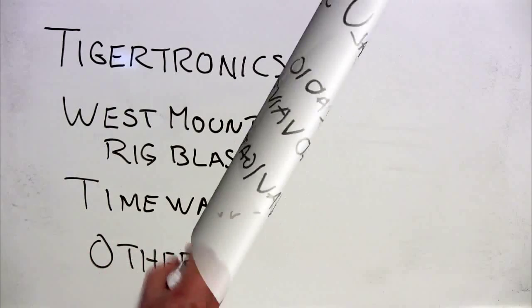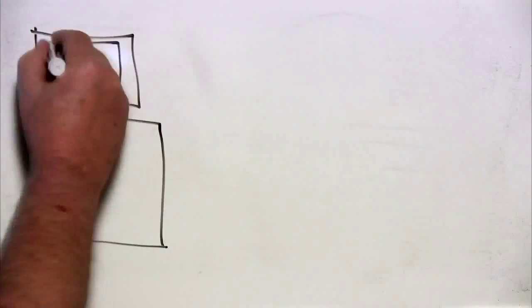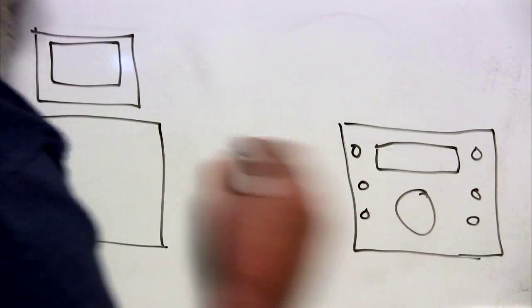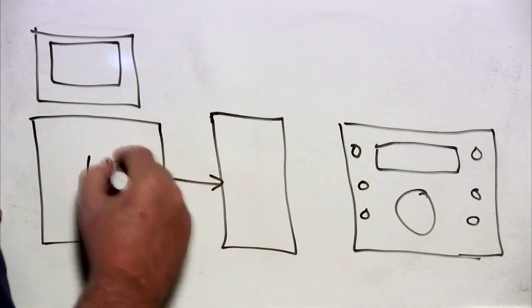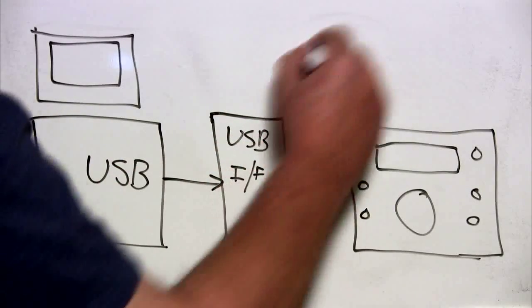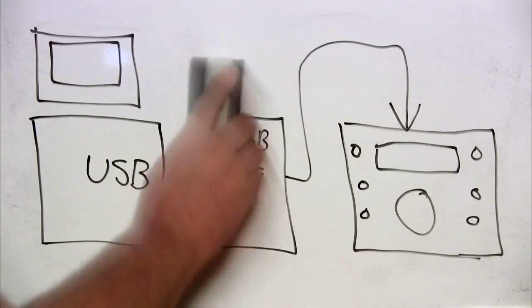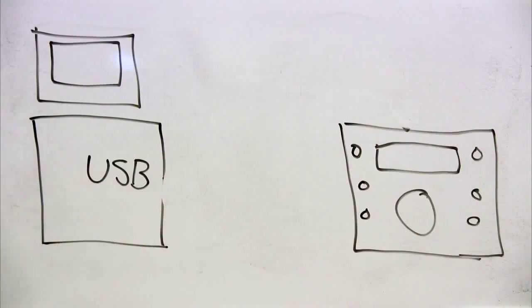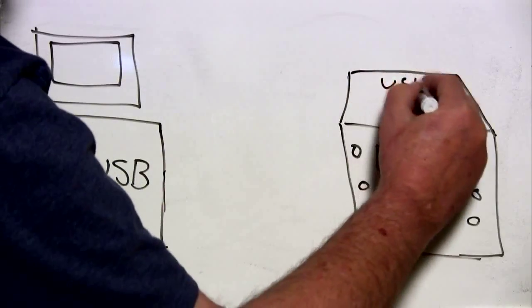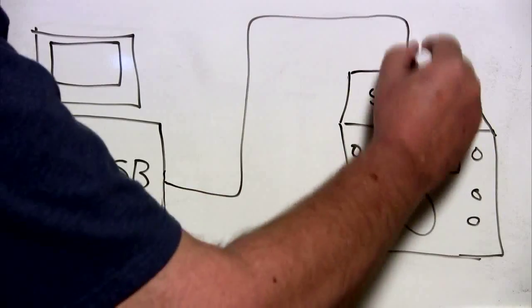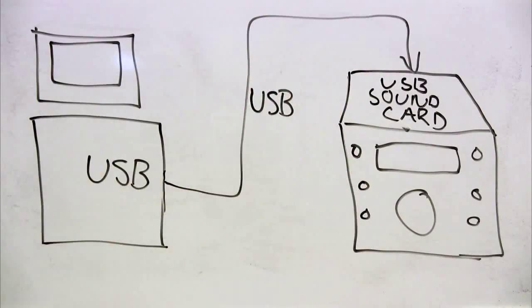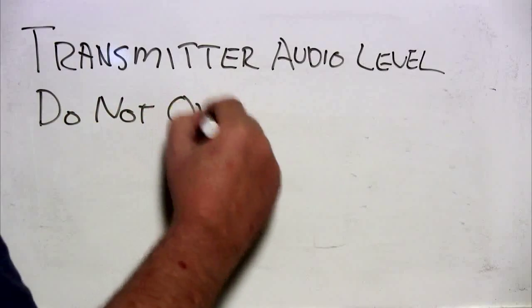So now the next progression is to move the sound card interface into the radio. So now no box is required from the computer to the radio. A single USB connection handles both the audio and rig control. This is built into the radio. This is now available on many of the new ICOM, Kenwood, and Yaesu radios.